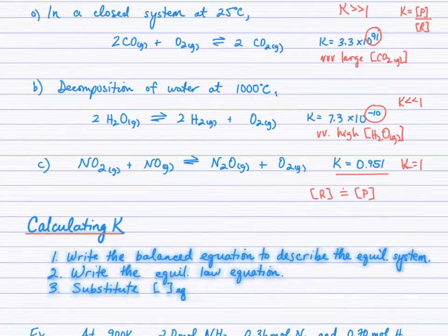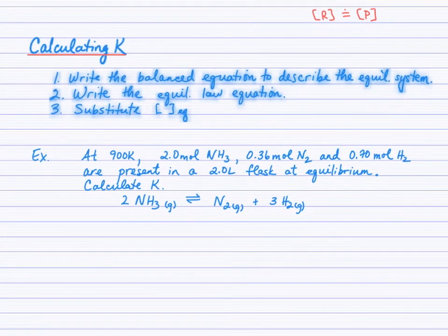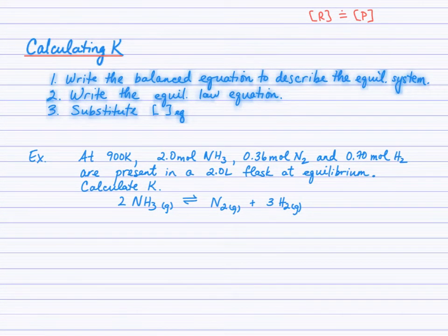How do we actually obtain the value of K? Well, it depends what information you've been given. But generally, you can write a balanced equation to describe the equilibrium system. Often that's provided in the question. Then write the equilibrium law equation that you've just learned to do, and then substitute the equilibrium concentrations. Remember, concentration comes from a calculation of moles over volume. So be prepared to do that if the equilibrium concentrations are given in terms of their moles in the volume.